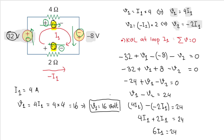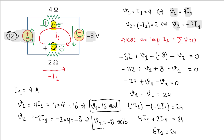And the value of v2: v2 equals minus 2i1, so v2 equals minus 2 multiplied by 4, which equals minus 8 volts. I think that's all for this problem. Hopefully I did not make any mistakes in my calculation — thank you for watching, see you in the next video!